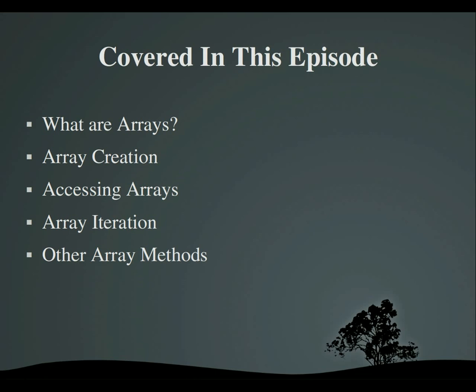Let's get started. Arrays are a type of variable — think of it as a list. This list can hold anything: names, numbers, objects, anything. Objects in the array have a number depending on what place they are in the list. Because computers start counting at zero, not one, the first element in the array is at zero. So keep that in mind.